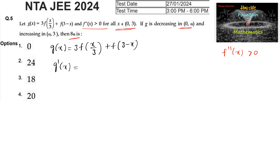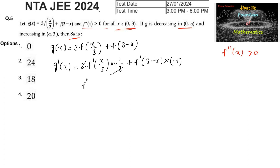g'(x) = 3 times f'(x/3) times (1/3), plus differentiation of f(3-x) which is f'(3-x) times (-1). This simplifies to f'(x/3) minus f'(3-x). This is g'(x).